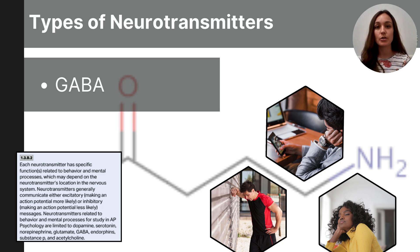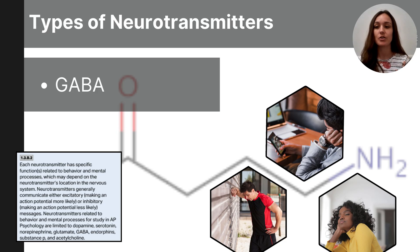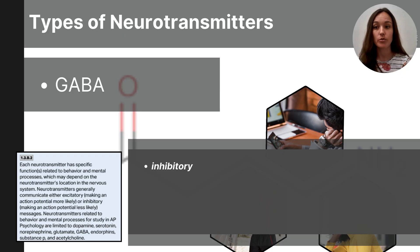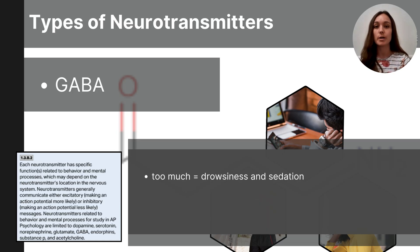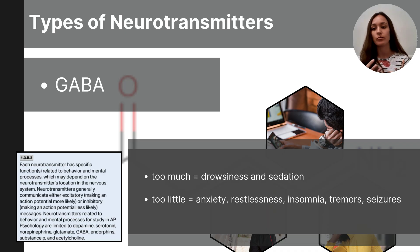Now let me talk about the specific neurotransmitters you need to know as AP psychology students. You'll need to describe each of their functions as well as what happens if there is an excess or deficiency. The first is called GABA, which stands for gamma-aminobutyric acid, and it's an inhibitory neurotransmitter. It helps reduce neural activity, promotes calmness, slows the nervous system, prevents over-excitation of neurons, and helps regulate anxiety, stress, and overall brain activity. Too much GABA can lead to excessive drowsiness or sedation, and too little can result in anxiety, restlessness, insomnia, or conditions like tremors or seizures.